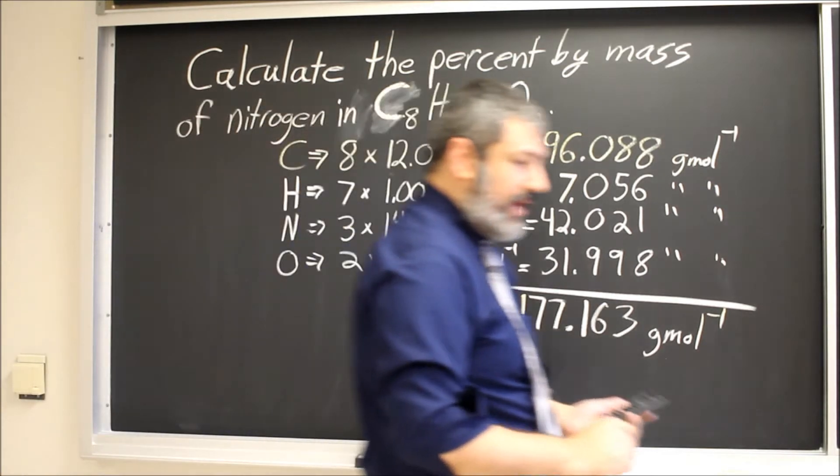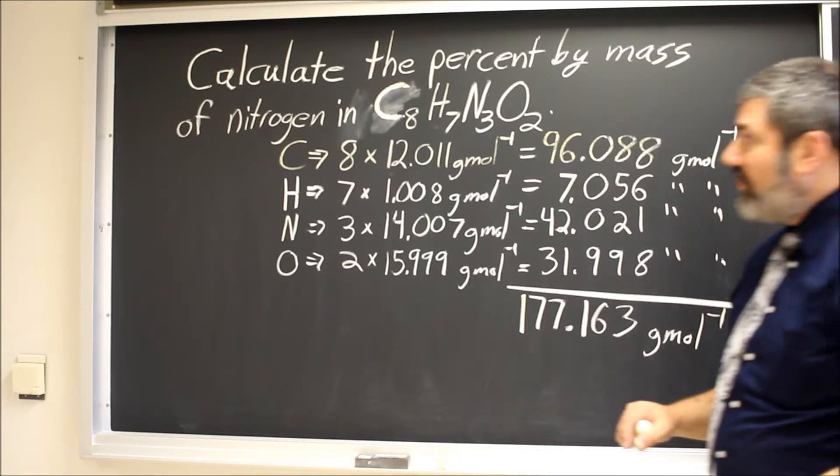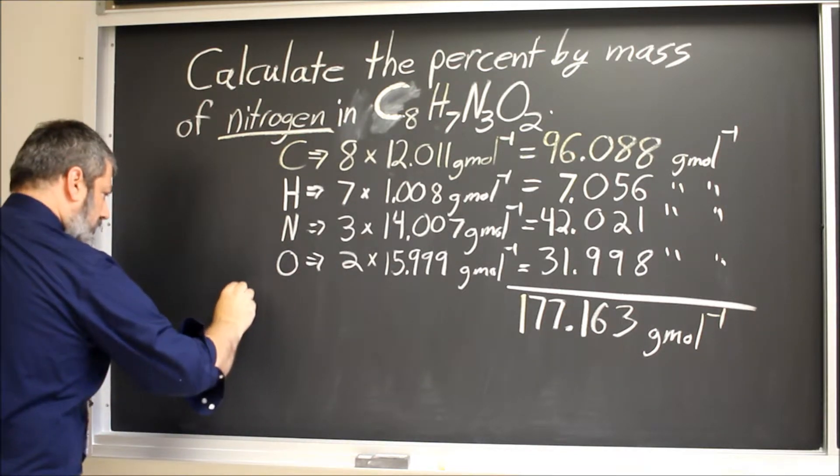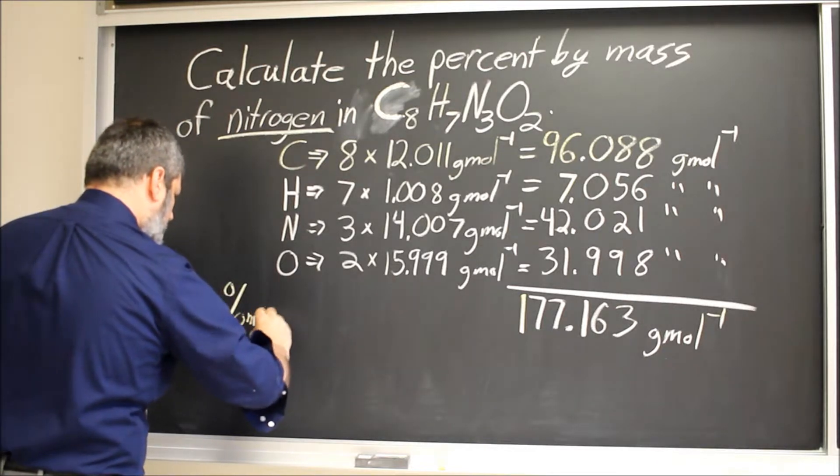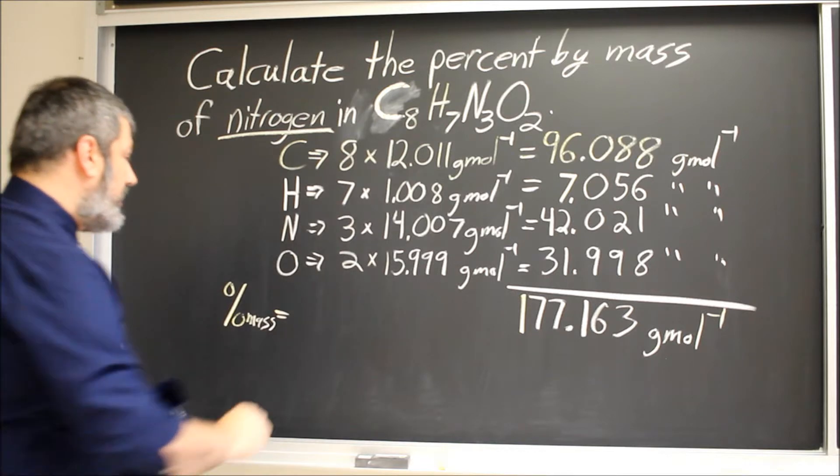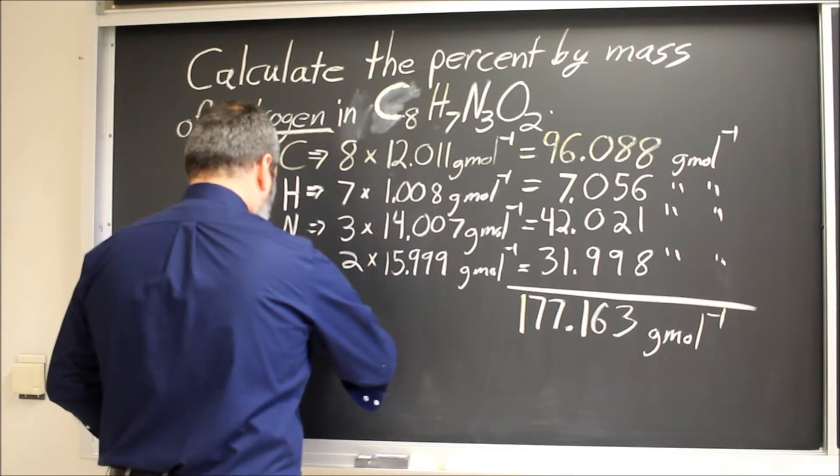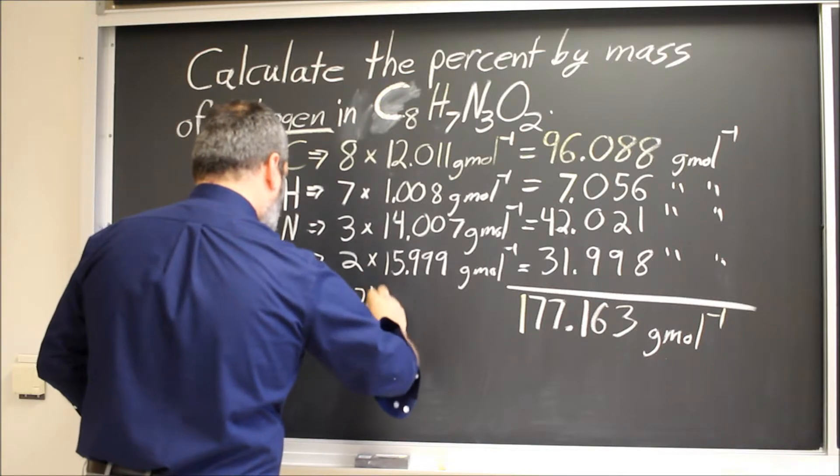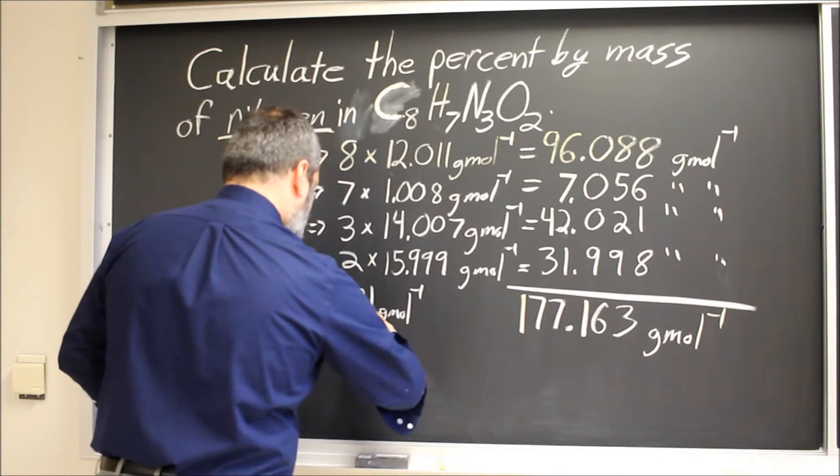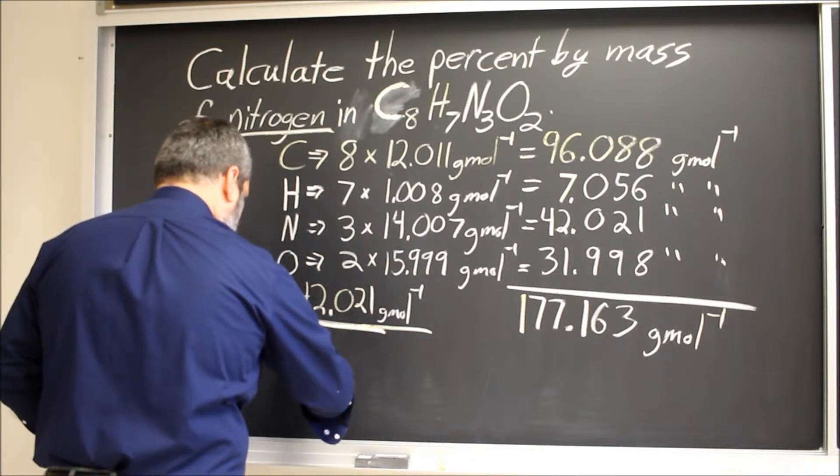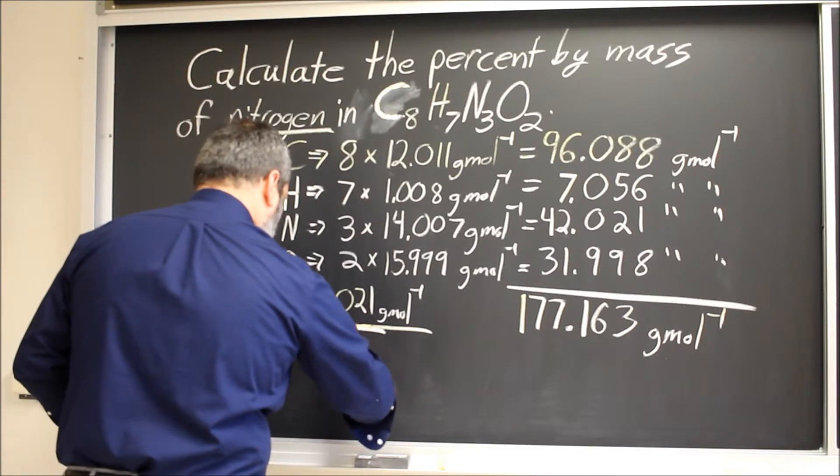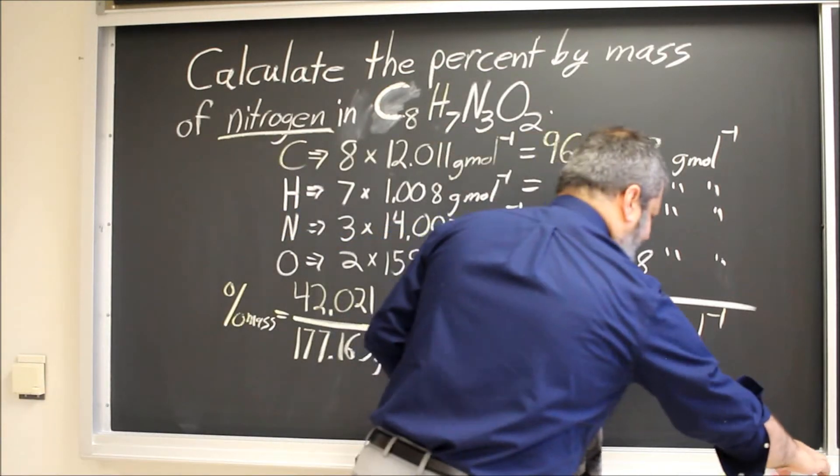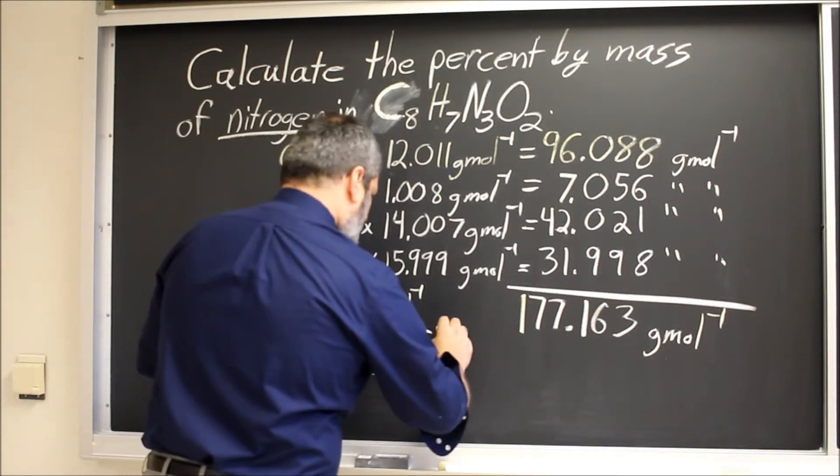So that's my total molar mass for this compound. We want the percent by mass of nitrogen. So percent by mass is going to be the mass of the nitrogen atoms, which is 42.021 grams per mole divided by the total molar mass. And I went ahead and put my units in just to make a point. Percentages, oops, not quite done, times 100.